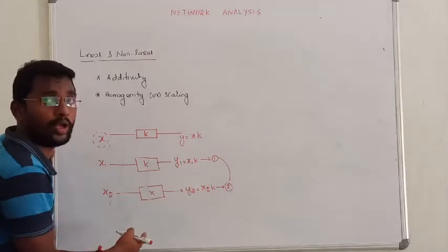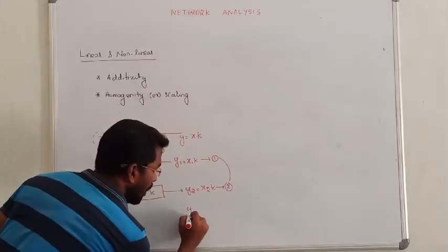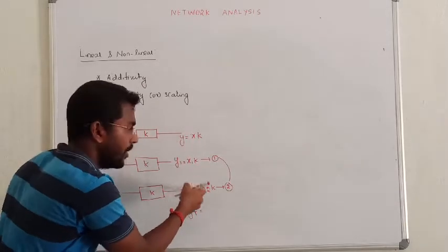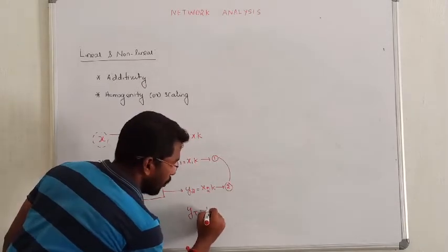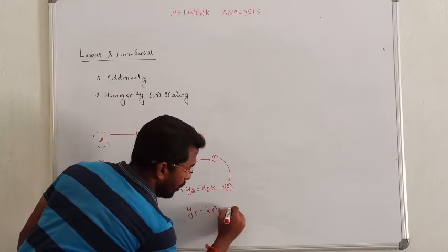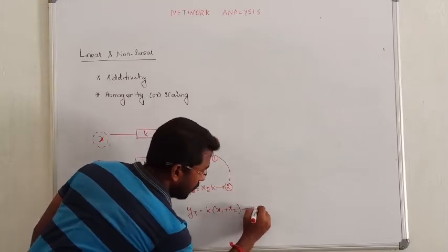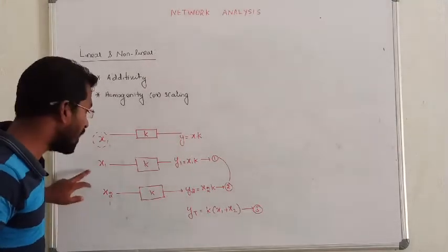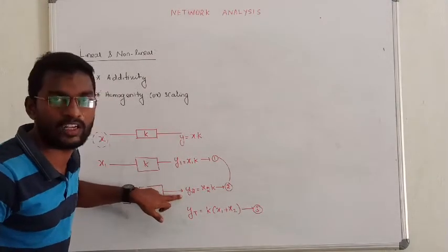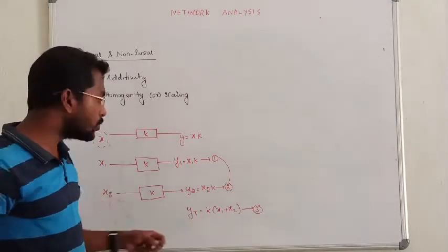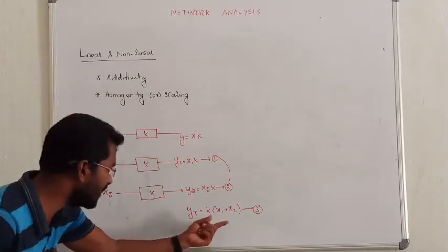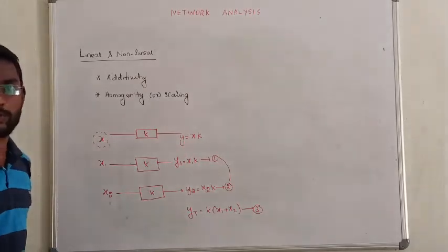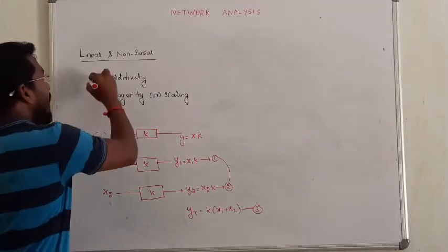The total output, yt is equal to y1 plus y2. If you want to add value, what will we have to solve? So, k into x1 plus x2, correct? So what have you done here? You can pass the signal, you can add value. So if you want to add value, ideal response x1 plus x2 directly add value in the system. That is the additivity principle.